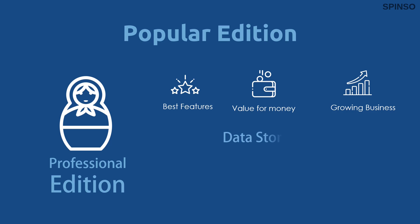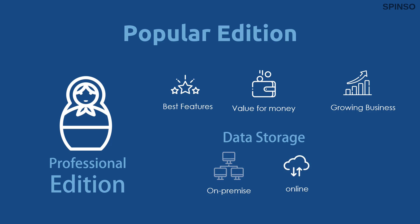With SalesTracker Professional Edition, you get both options: on-premise and online. In case of on-premise, you can store your data on your local PC or server and access it on LAN without the use of internet. In case of online, the data is stored on Spinso Cloud Server and can be accessed from multiple locations via internet.